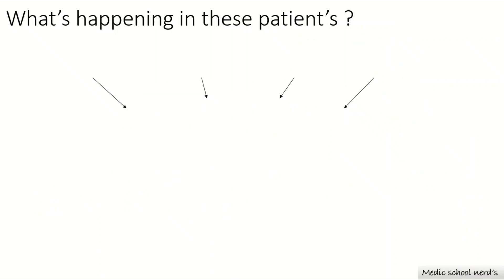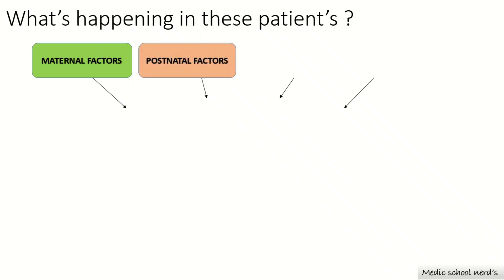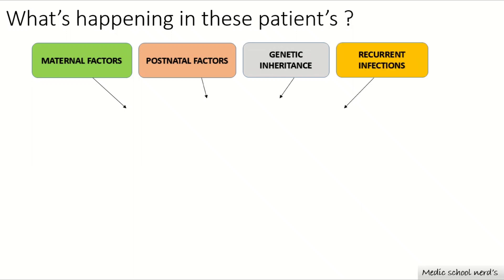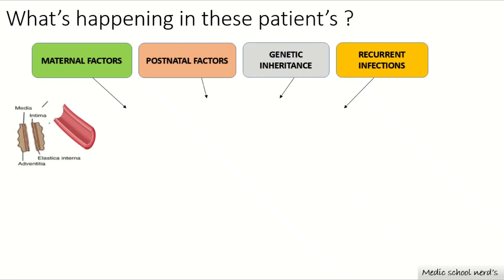Other implicated genes include CASP3, BLK, and HLA (human leukocyte antigen), which are also important in T-cell regulation. Contributing factors include maternal vaginal infections during childbirth, postnatal factors such as breastfeeding, environmental toxins like heavy metals, genetic inheritance, and recurrent infections from Staphylococcus or streptococcal throat infections in childhood.